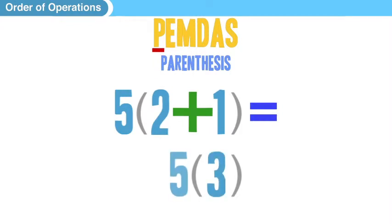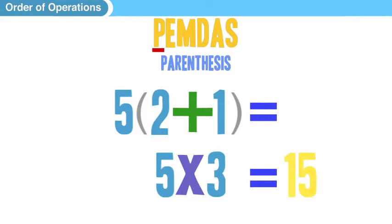And now we have 5 outside of the parentheses 3. And that parentheses there, as you know, means multiplication. So then we do 5 times 3, 15, and that is the correct way to evaluate that expression.